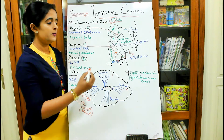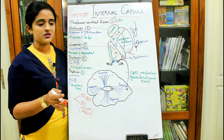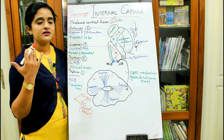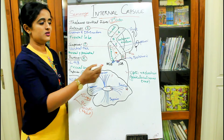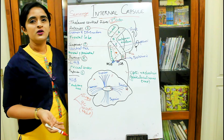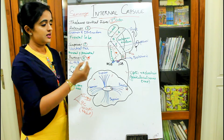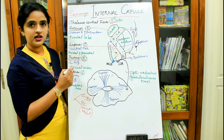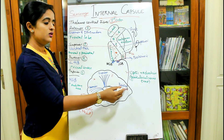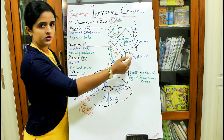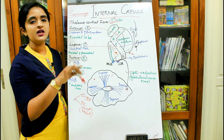A useful mnemonic: L stands for light, so L (lateral geniculate body) deals with optic radiations. M stands for music, which we hear, so M (medial geniculate body) relates to auditory radiations. To summarize the posterior thalamic radiation: it arises from the lateral geniculate body, projects to the primary visual cortex in the occipital lobe, and passes through the retrolentiform part of the internal capsule.